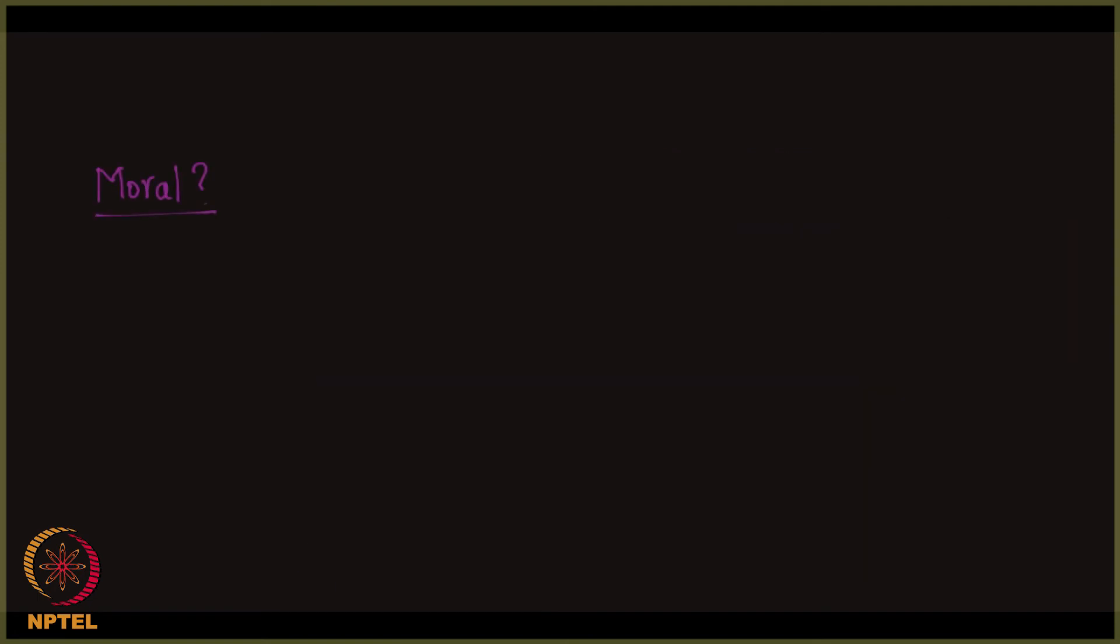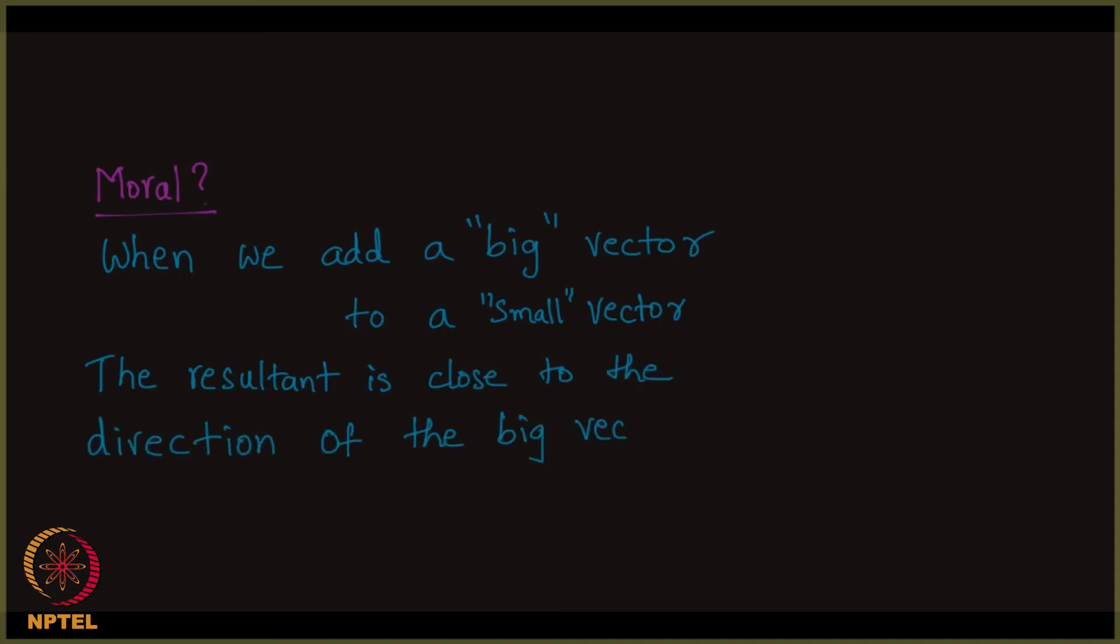What is the moral that we learned just now? What did we observe just now? You can pause and think about what we just now said and then continue the video. When we add a big vector to a small vector, the resultant vector is close to the direction of the big vector, big in quotes.